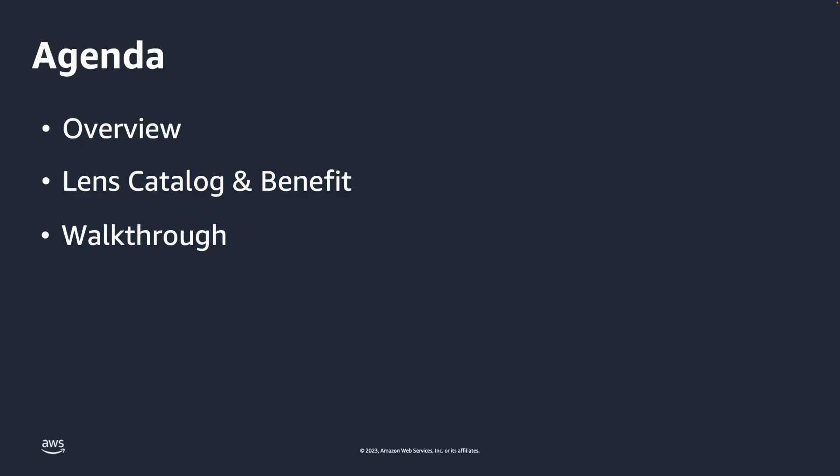Before we start, here is an agenda on what we will go through. I will start off with a quick high-level overview about the new Lens Catalog feature in the Well-Architected tool. Then I will dive deeper into the benefits of this new feature, and then hand over to Bob to cover a step-by-step demonstration on how to use this feature in the AWS console.